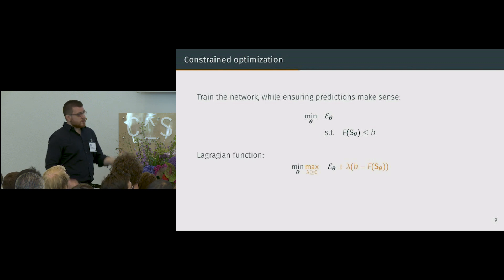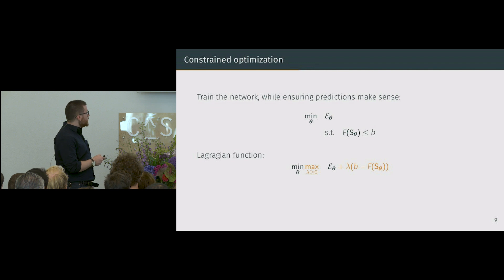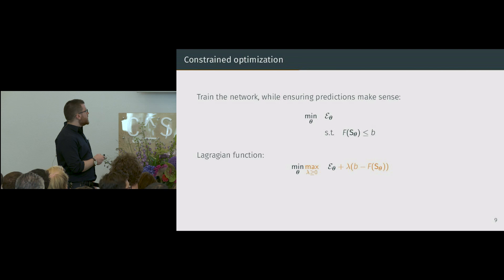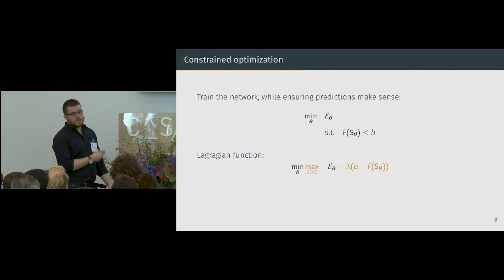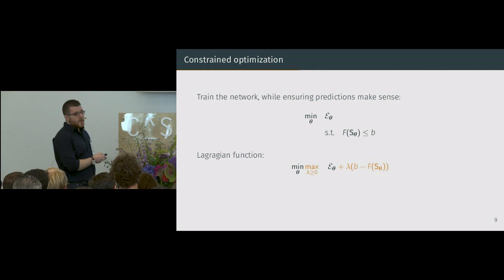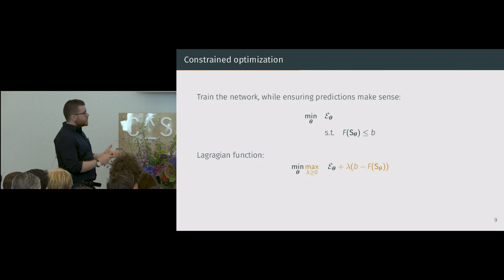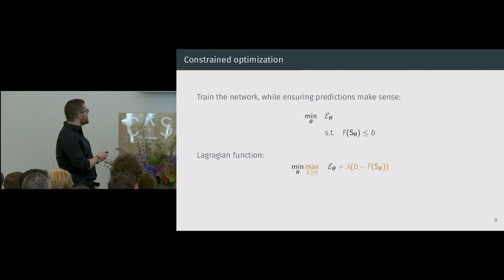The usual way in constrained optimization would be to create a Lagrangian function where we include directly into the loss the constraints and add a parameter lambda that we need to figure out. When we are respecting the constraints, lambda will be set to zero, so we just optimize the initial error function. When it's not, we have a penalty to deal with. But we cannot simply find lambda first and then optimize the parameters — this is a difficult problem.